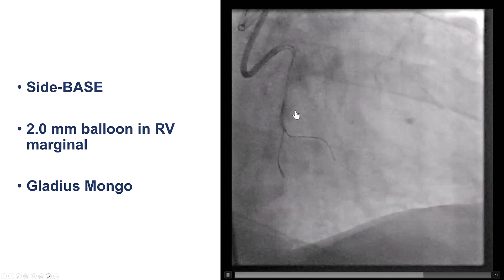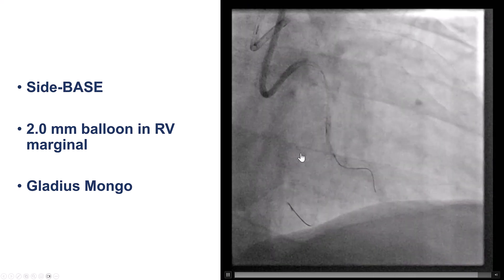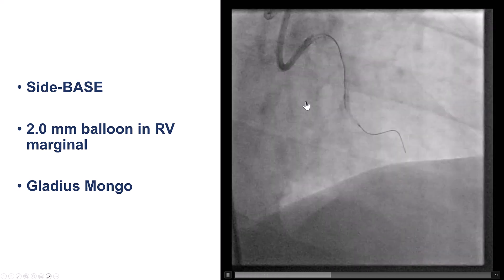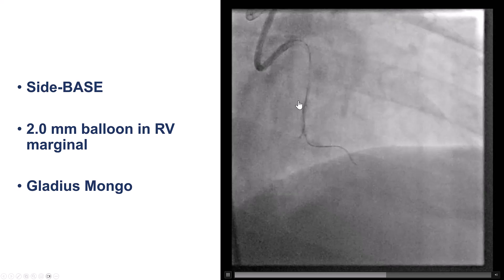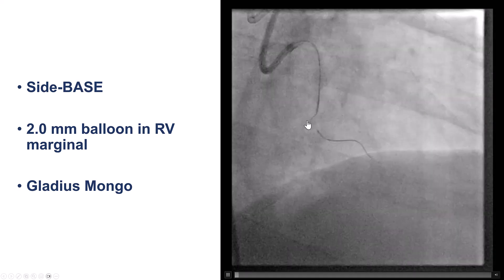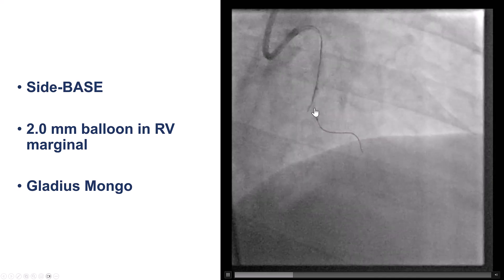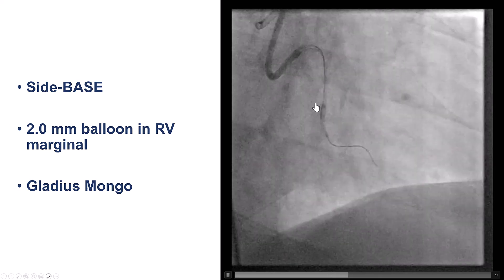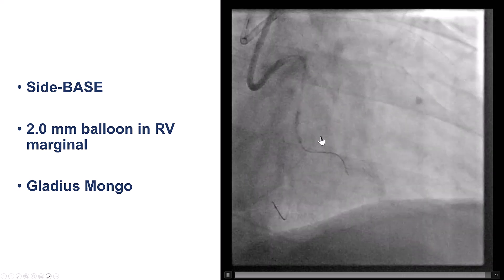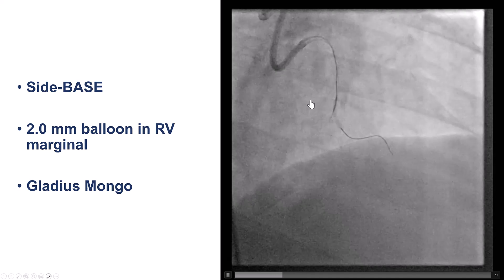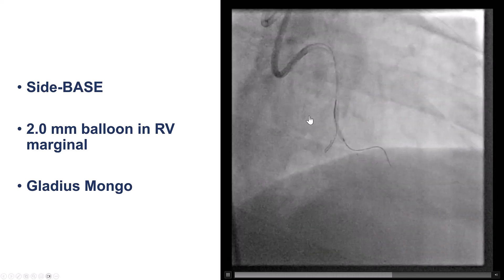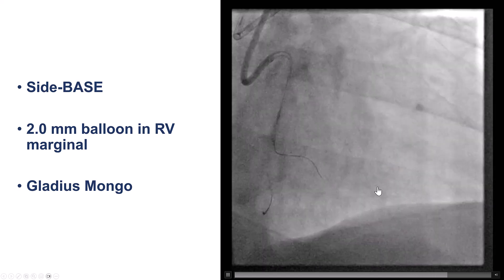As a reminder, the side-based procedure is one way to wire along the vessel architecture while avoiding the wire going into a side branch. The way we do this is we take a small balloon — in this case a 2.0 balloon — that is inflated halfway in the main vessel and halfway into the side branch. After the balloon is inflated, a guide wire is knuckled. The balloon prevents the guide wire from going into the side branch.